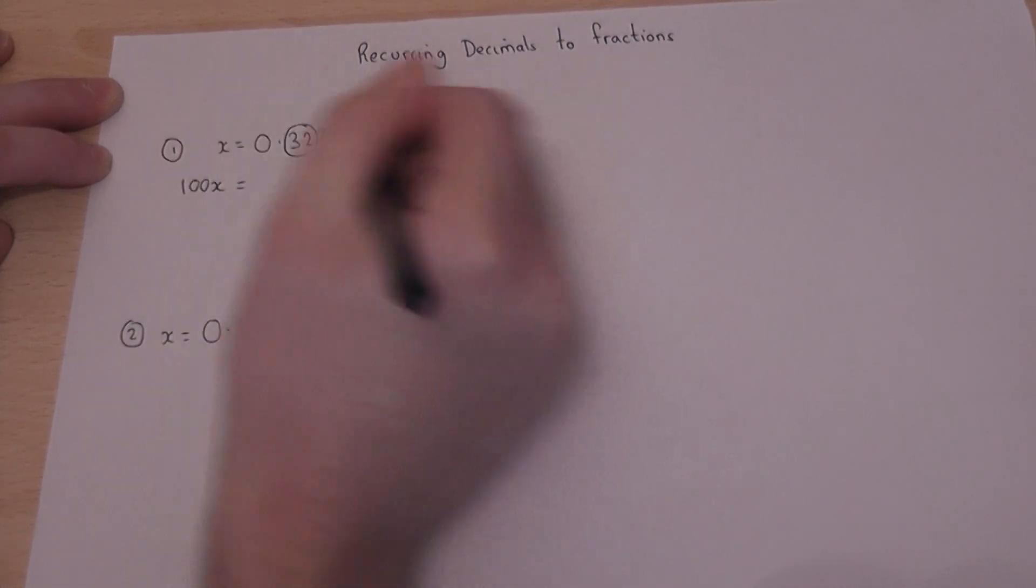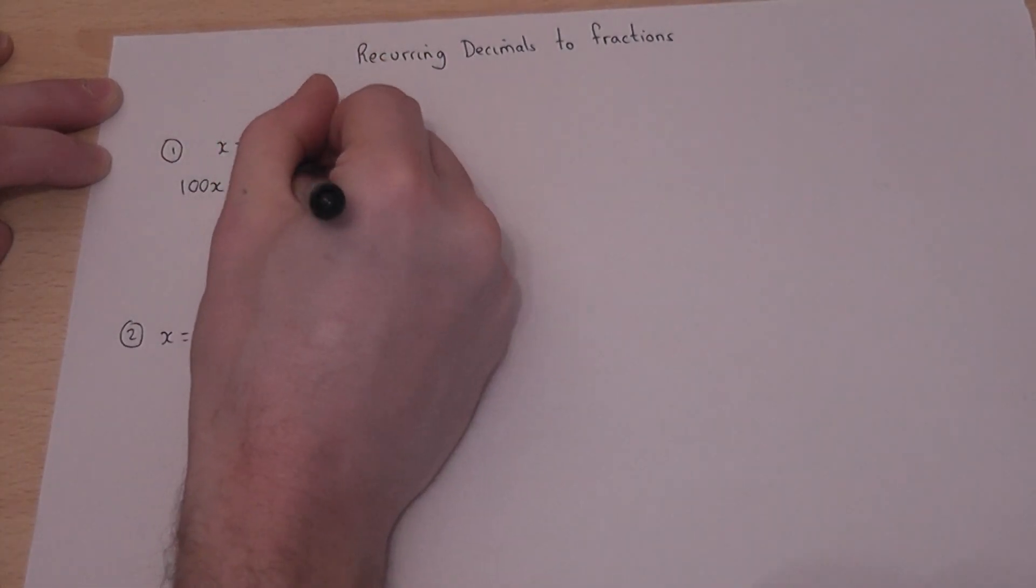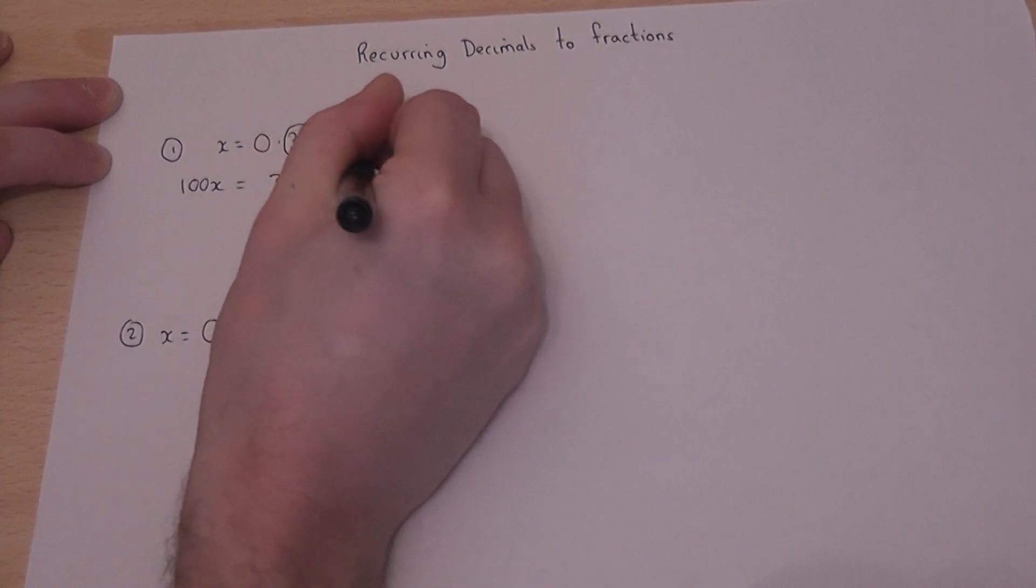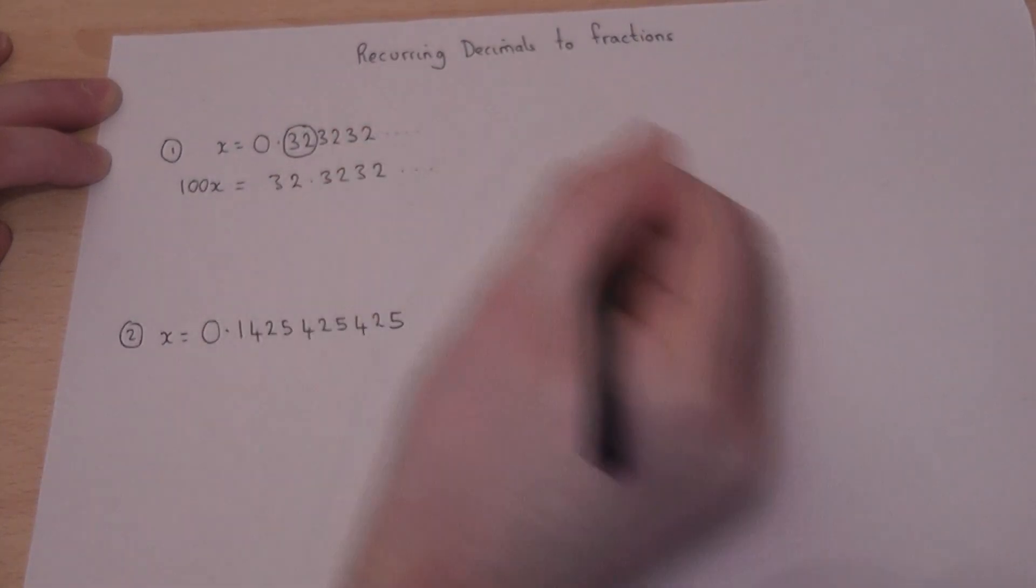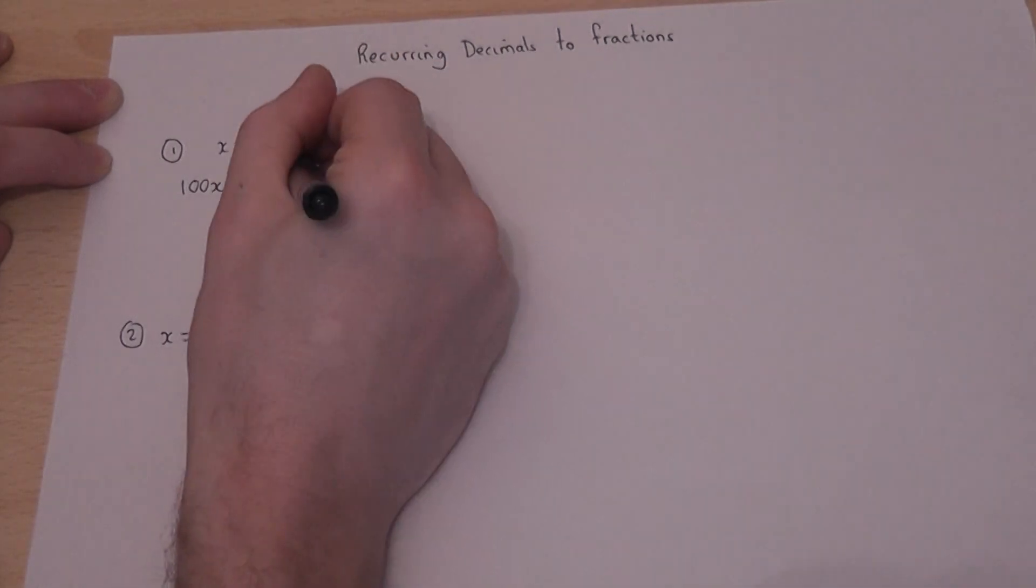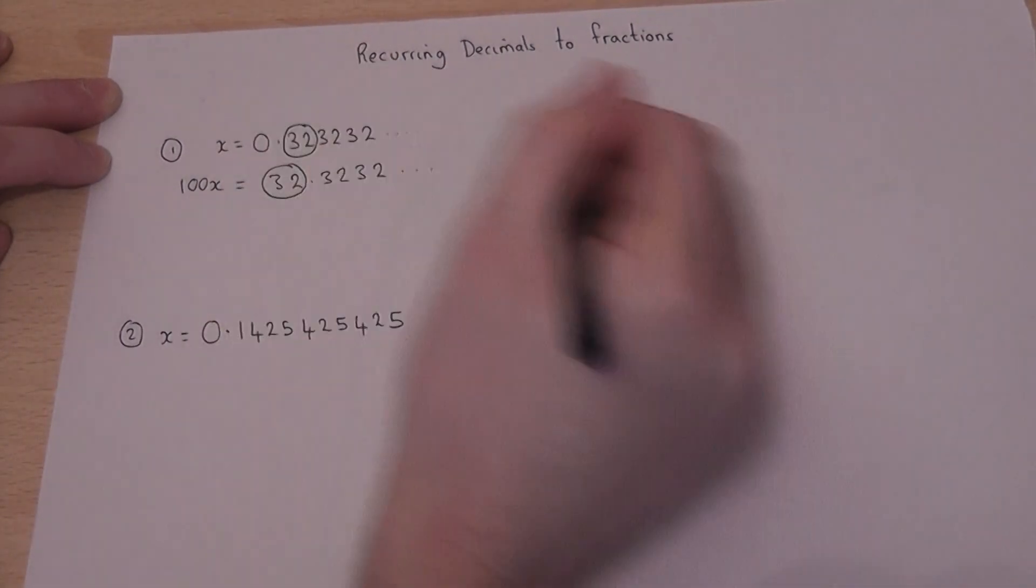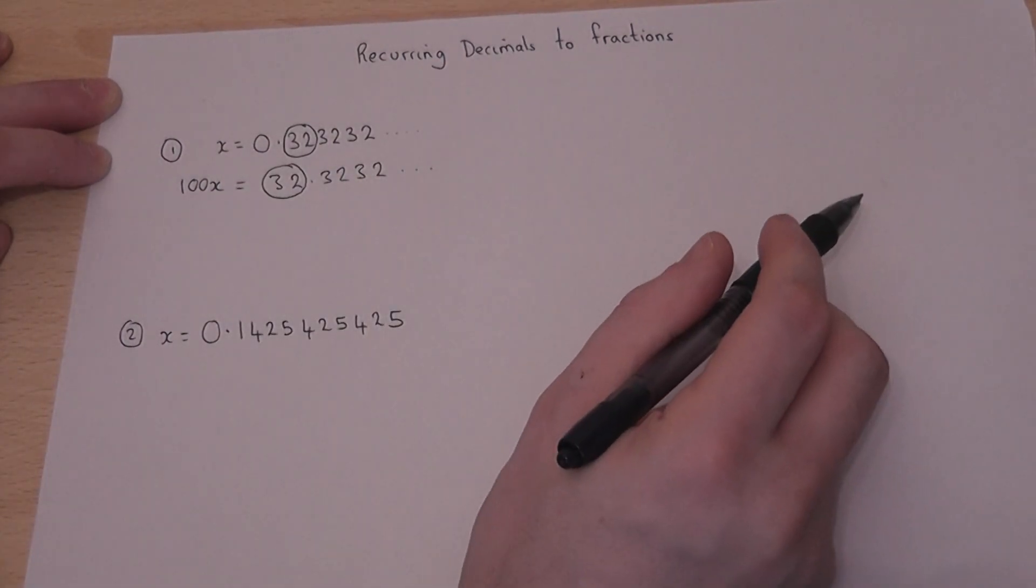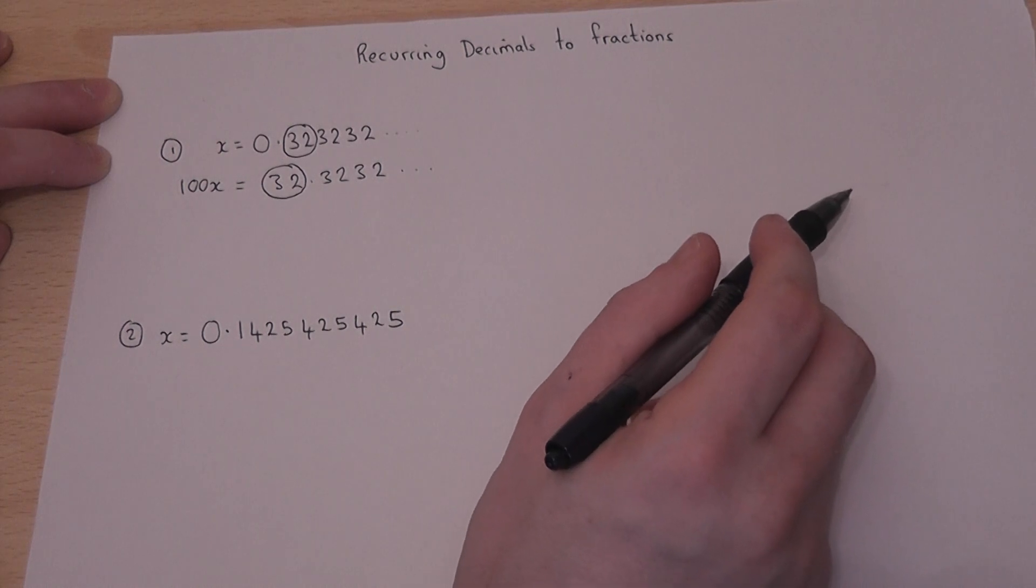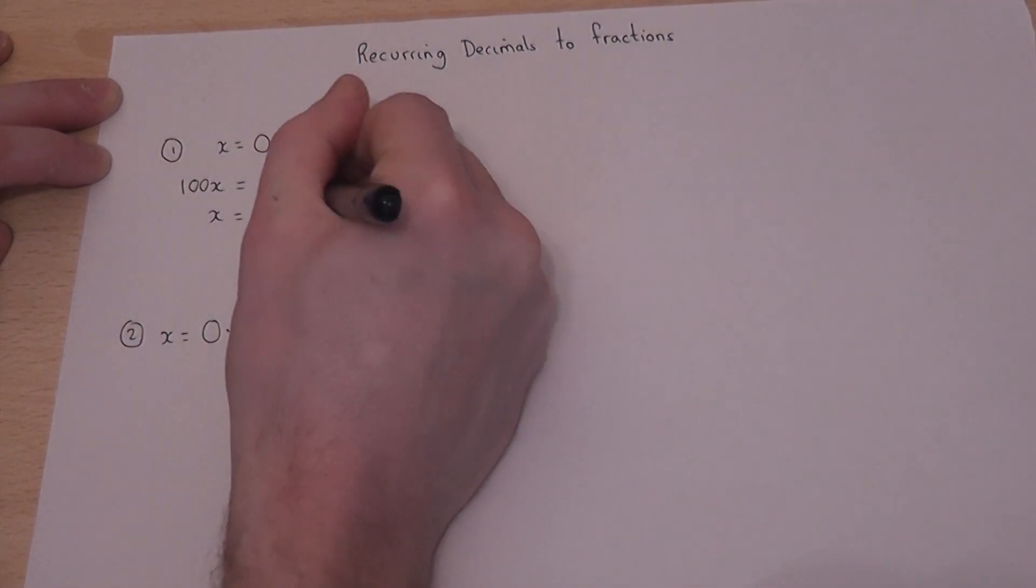Then it becomes 32.3232. So I've got the recurring part to the left of the decimal point. In this case, I will then write down x again below it.